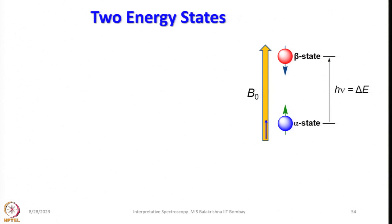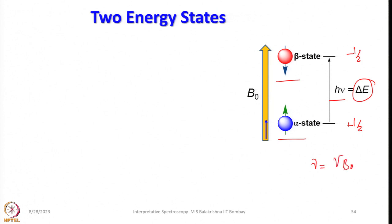With nuclear spin I equals half, we have two energy states: the plus half state is low in energy and minus half is higher in energy. They are represented with a downward arrow indicating minus half value and an upward arrow indicating plus half value. The gap between them is delta E equals h-nu, which one can obtain directly from gamma B-naught over 2 pi, where B-naught is the magnetic field strength and gamma is the gyromagnetic ratio.